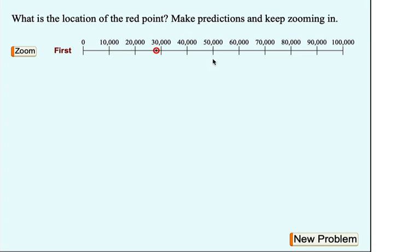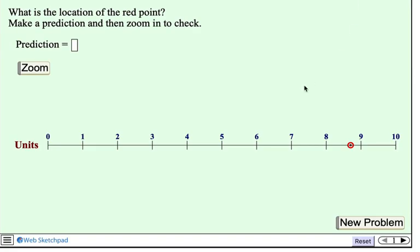Now, in all of these problems, the location of the red point is always an exact integer. But what if it's not? That leads to our second activity, which is zooming decimals. Here we have a point, and it's somewhere between 8 and 9. Oh, so what's its location?